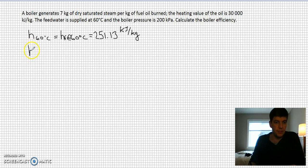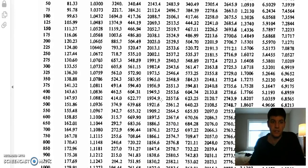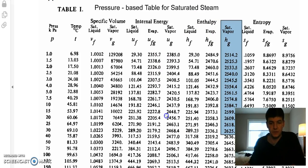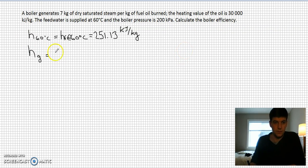We also need our enthalpy value of dry steam at 200 kPa, which is my HG value at 200 kPa. I'm going to go to my pressure tables at 200 and find my HG value. My HG is down this column. At 200, if I carefully come across and find my HG value, it's 2706.7 kilojoules per kilogram. This is my steam and water side.